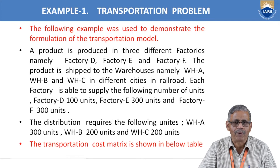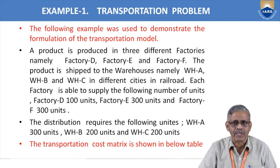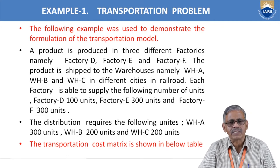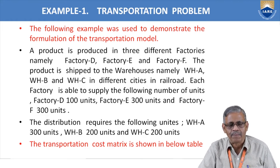For clarity, we will work through a problem. A product is produced in three factories: factory D, factory E, and factory F. The product is shipped by railroad to warehouses A, B, and C in different cities. Factory D can supply 100 units, factory E 300 units, and factory F 300 units. Warehouse A requires 300 units, warehouse B 200 units, and warehouse C 200 units. This problem includes factory capacities, warehouse requirements, and a cost matrix — all requirements of the transportation problem.